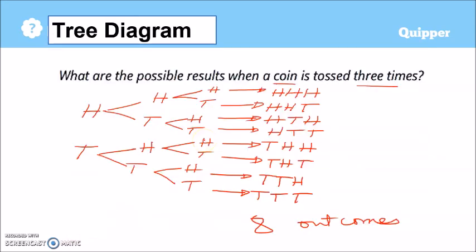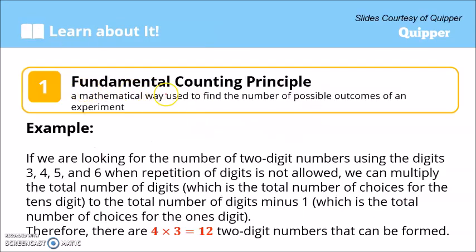In that case we use another technique, and that is the fundamental counting principle. The fundamental counting principle is a mathematical way used to find the number of possible outcomes of an experiment. For example, if we are looking for the number of two-digit numbers using the digits 3, 4, 5, and 6 when repetition of digits is not allowed, we can multiply the total number of choices for each digit position.